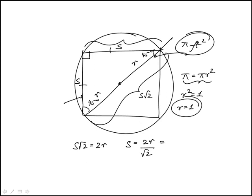So the side of the square is 2 times 1 over √2. This is the same as √2, because 2 over √2 equals √2.